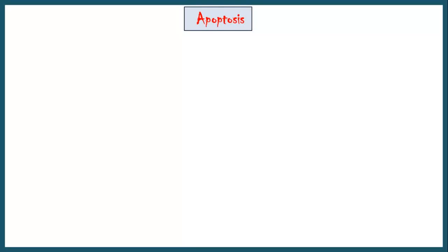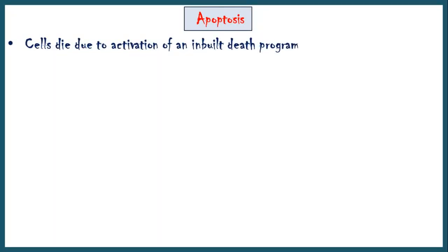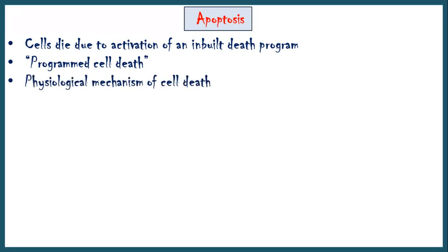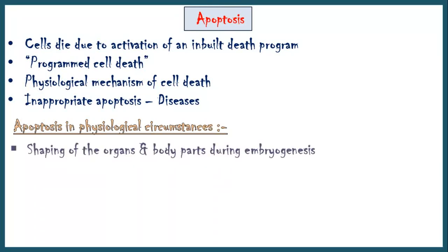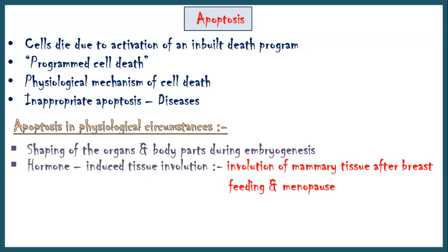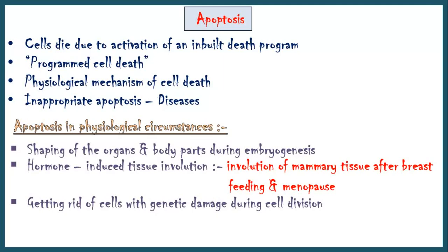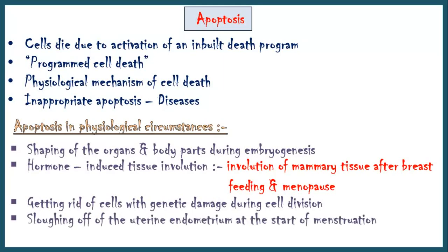Now let's discuss apoptosis. It is a mechanism by which cells die due to activation of an in-built death program — hence it is also called programmed cell death. Unlike necrosis, apoptosis is a physiological mechanism of cell death; however, inappropriate apoptosis may lead to diseases. Examples of apoptosis in physiological situations include: shaping of organs and body parts during embryogenesis; hormone-induced tissue involution such as involution of mammary tissue after breastfeeding and menopause; getting rid of cells with genetic damage during cell division; sloughing off of the uterine endometrium at the start of menstruation; and removal of unwanted autoreactive immune cells.